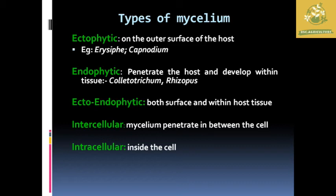We must also know about the different types of mycelium bodies present in parasites. These are ectophytic, endophytic, ecto-endophytic, intracellular, and intercellular. In ectophytic parasites, the mycelium bodies are present on the outer surface of the host — example Erysiphe. In endophytic parasites, the mycelium penetrates the host body and develops within the tissues — examples include Colletotrichum and Rhizopus. In ecto-endophytic parasites, mycelium is found both on the surface and within the host cells.